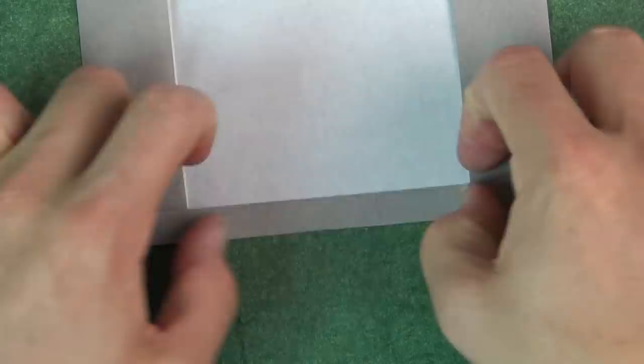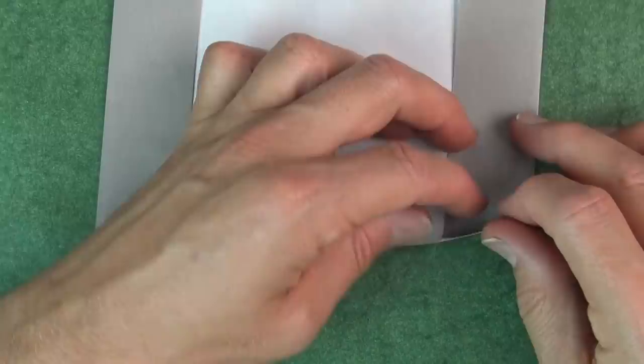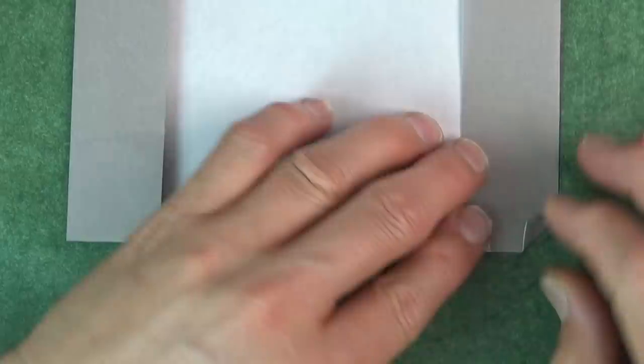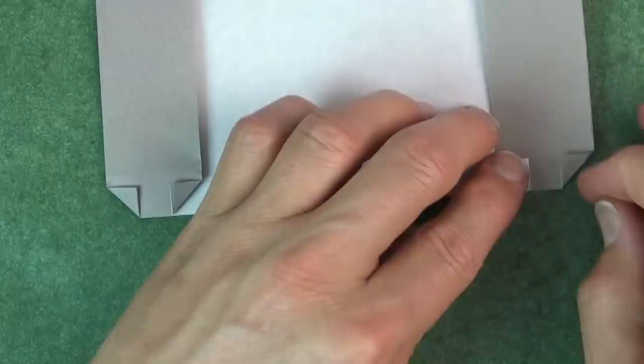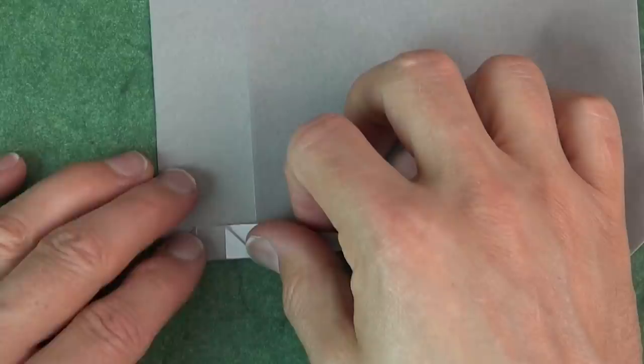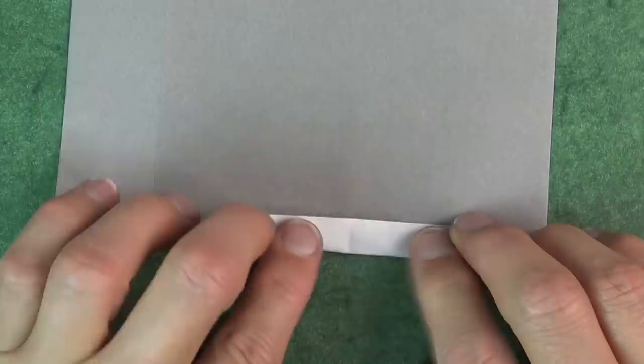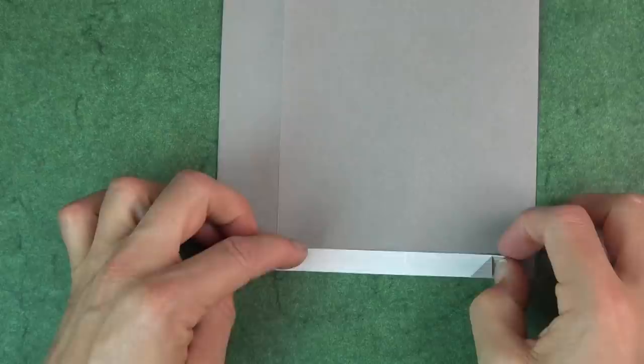Alright, now let's rotate and repeat on this side. But this time, instead of going in front, we're going to fold the flap behind. So turn over and fold like this. Okay, turn back over.